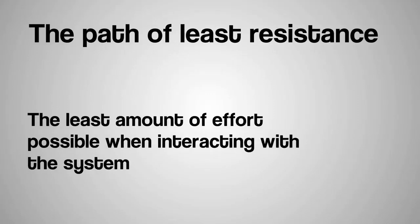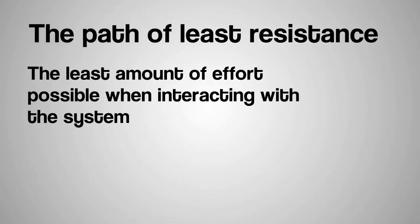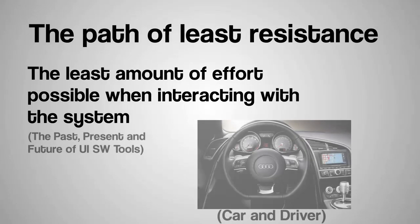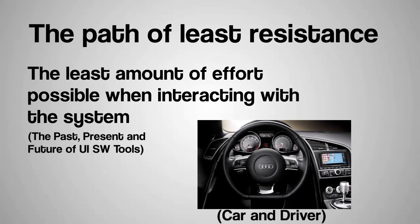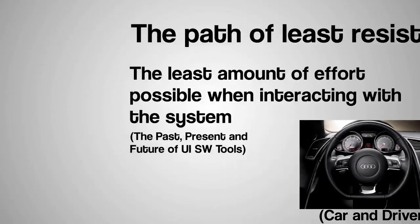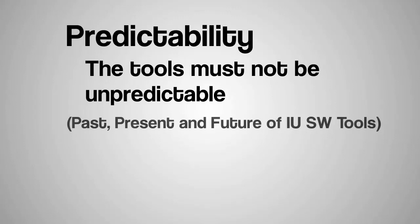The third theme is called path of least resistance, in which successful tools allow people to use the least amount of effort possible when interacting with the system. Fourthly, predictability is also important in determining what is successful — the tools must not be unpredictable.